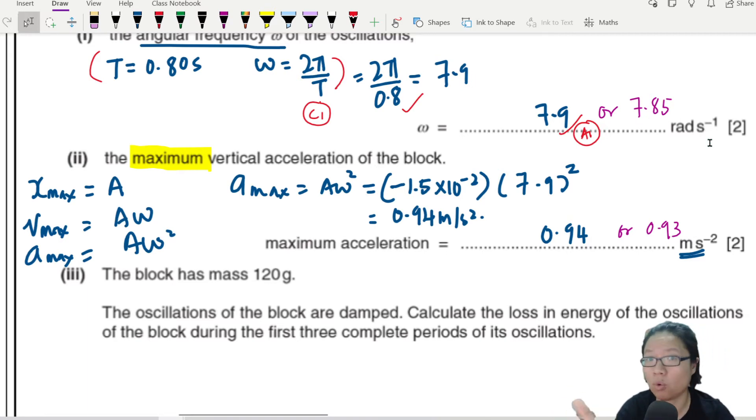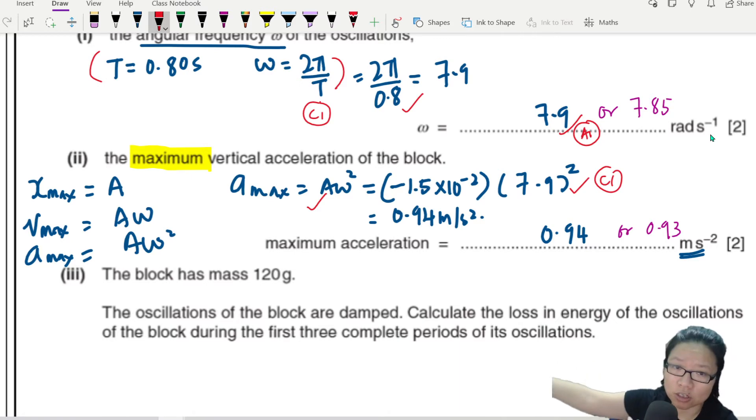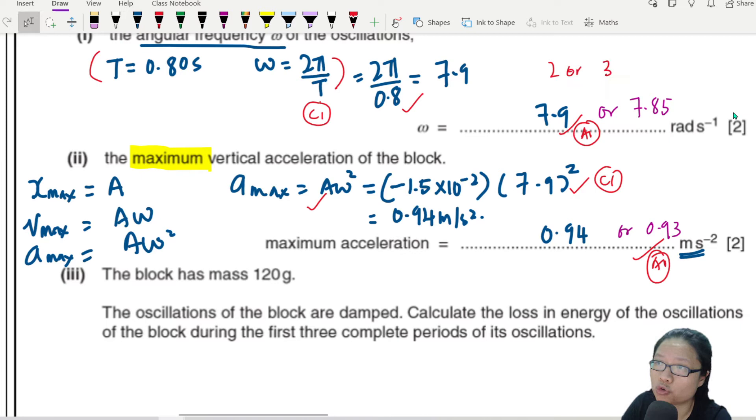You could write 2π over 0.8s equal to 7.85 equal to 7.9, or you just stick to 7.9. So what I need is actually to show the equation, showcase the equation, show the substitution. This is C1. You can substitute 7.9, you can substitute 7.85. It doesn't matter. As long as, as an examiner, I know where the value of omega come from. Leading to the answer A1. So don't worry too much about the last significant figure. But please write your answer in 2 or 3 significant figures. All the answers.